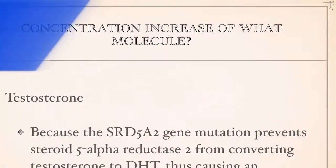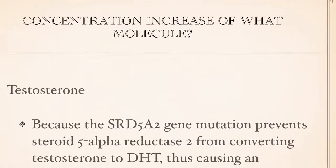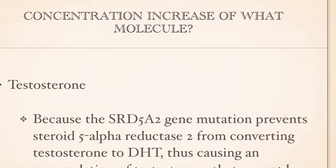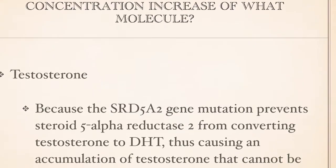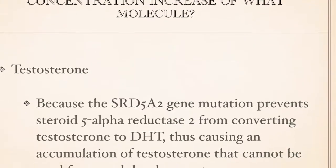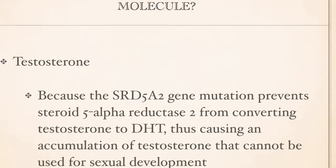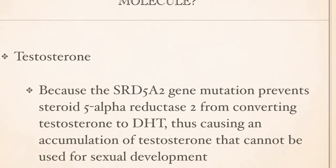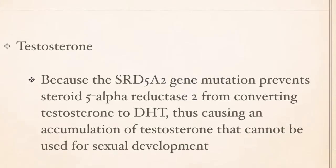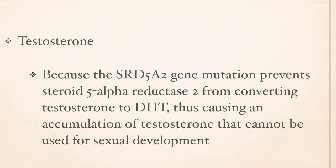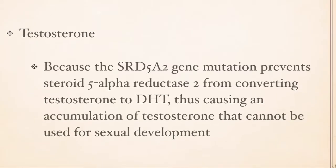As a result of this deficiency, the concentration of which molecules does increase? The molecule that increases is testosterone because the SRD5A2 gene mutation prevents steroid 5-alpha-reductase 2 from converting testosterone to DHT, thus causing an accumulation of testosterone that cannot be used for sexual development.